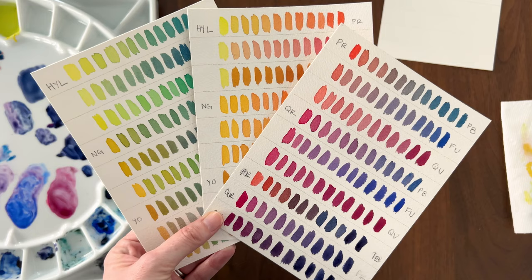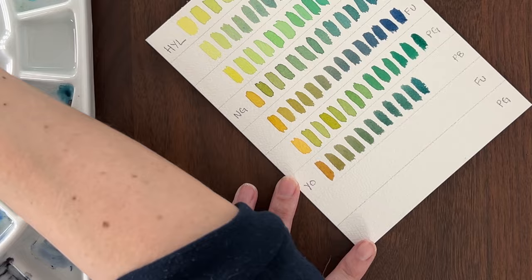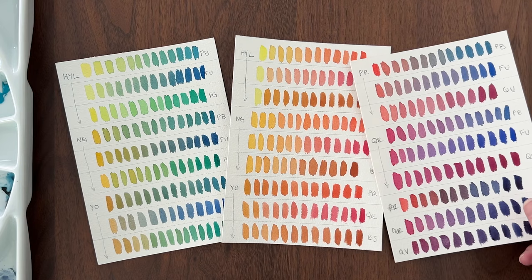I think where this type of color chart really shines is when you want to try a new color on your palette. You can quickly add to this chart and see how the new color mixes with your existing colors. So think of these like living color charts. Update them whenever you add a new color to your palette. But if you run out of space, you can easily make another chart to add to your collection.